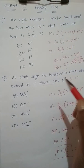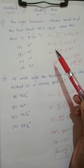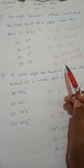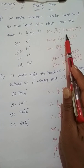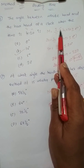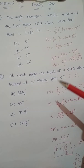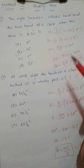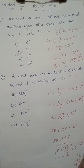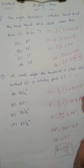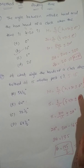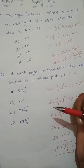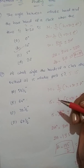So in Method 1 we find time from a given angle, and in Method 2 we find the angle from a given time. Both methods use the same formula: M = 2/11 × H1 × 30 ± A degrees. Four important angle values to remember: right angle is 90 degrees, coincide is 0 degrees, opposite direction is 180 degrees, and a complete clock is 360 degrees. Thank you.